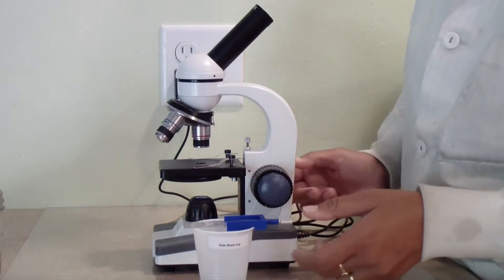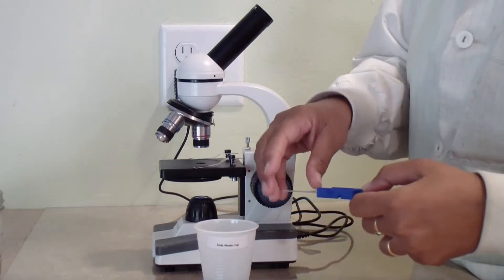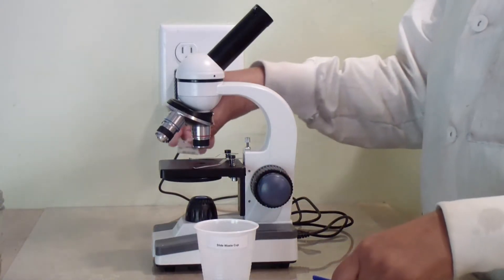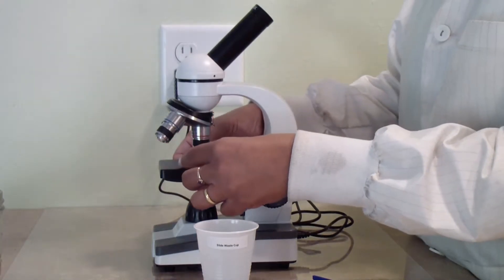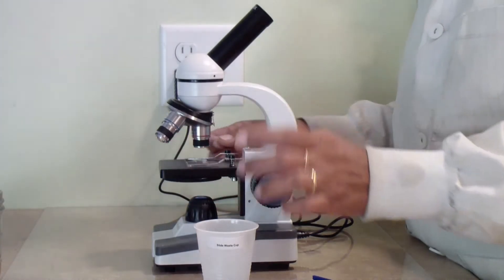Put the slide on the microscope stage. You will observe the sample at two magnifications: low magnification to scan the slide and medium magnification to see the microbes in more detail.